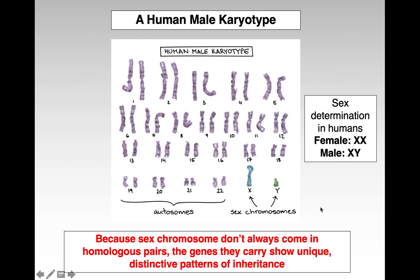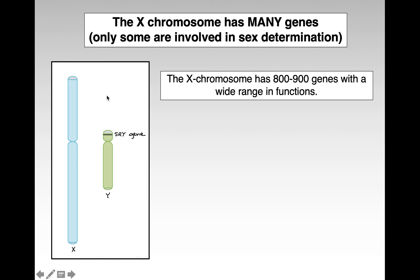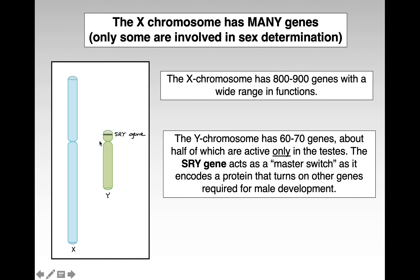Because sex chromosomes don't always come with homologous pairs — for example, in a male we don't have a homologous pair — they have really interesting patterns of inheritance. The X chromosome is a normal, large chromosome with lots of important genes. The Y chromosome only has a very few number of genes, and most of them are involved in male characteristics.